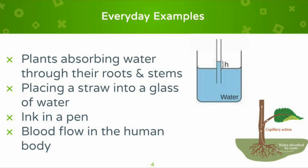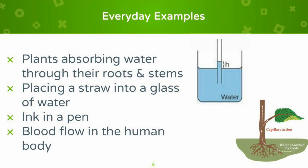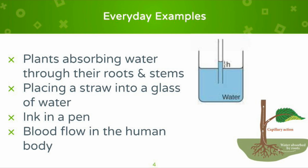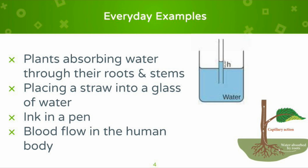So you might be wondering why does this even matter? We're going to talk about some examples of capillary action. One big example is plants absorbing water through their roots and stems. Capillary action plays a very crucial role in the movement of water within plants — water is absorbed by the roots and then transported all the way up to the leaves. This process is super important because it is how plants distribute water and nutrients, which they both need a lot.